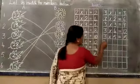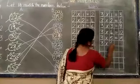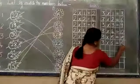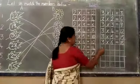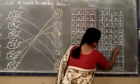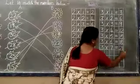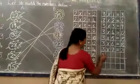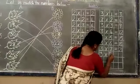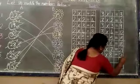3 into 5 is equal to 15. 3 sixes are 18. 3 into 7 is equal to 21. 3 sevens are 21. 3 into 8 is equal to 24. 3 eights are 24.